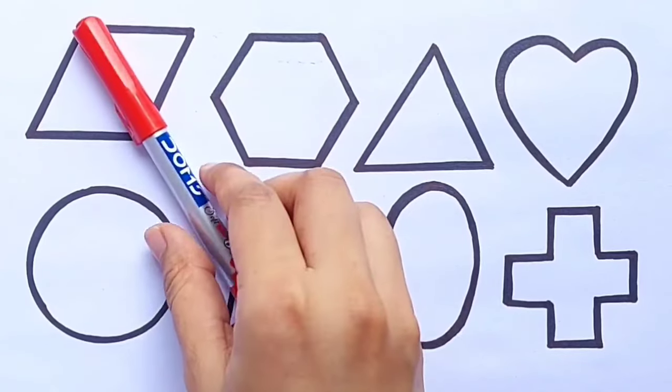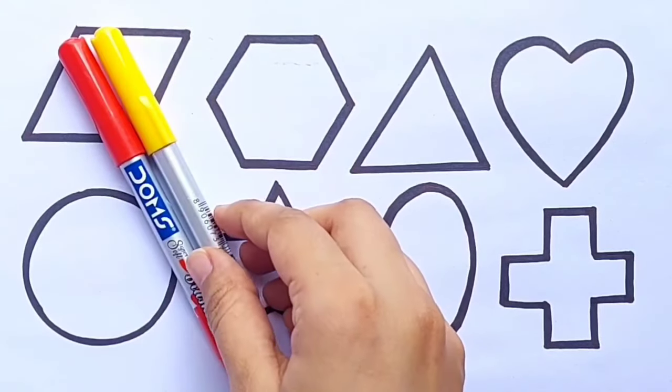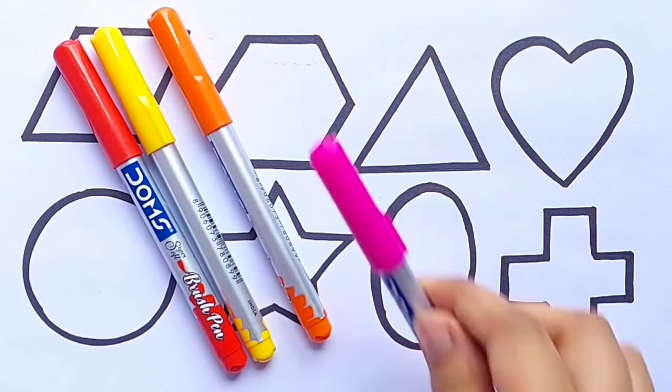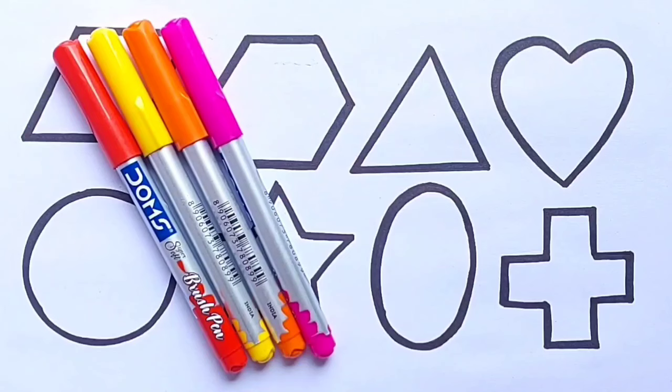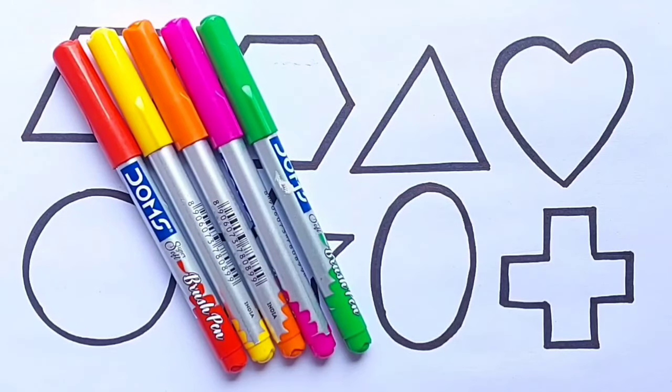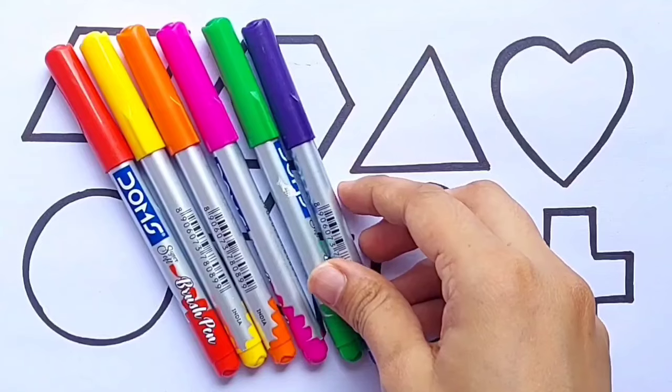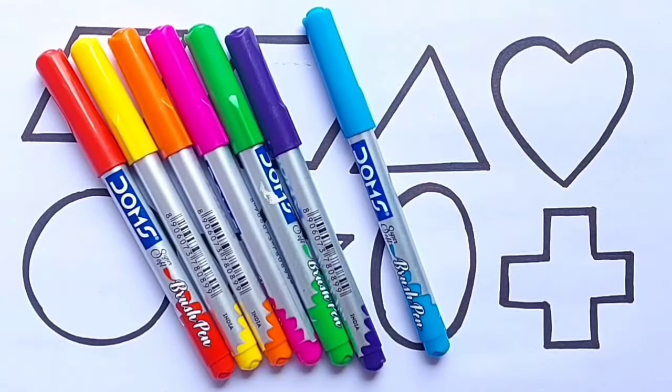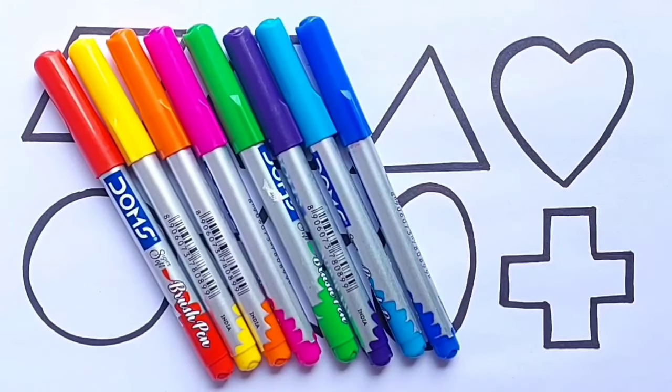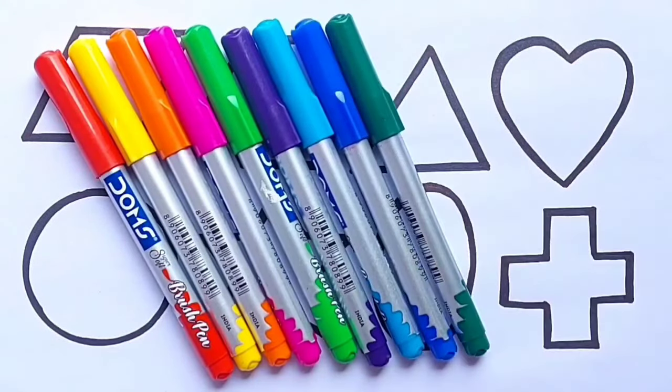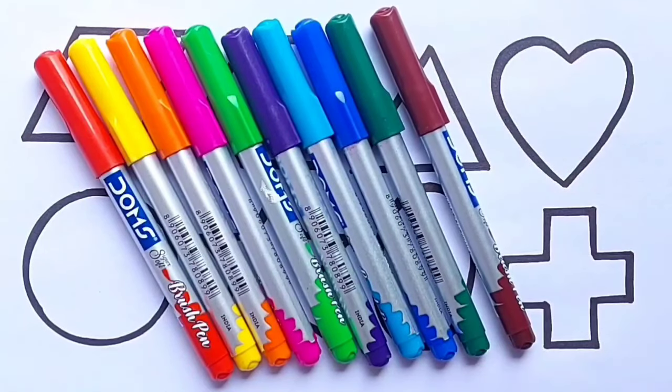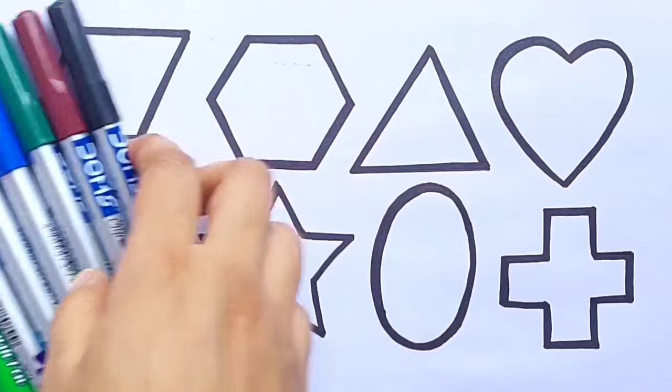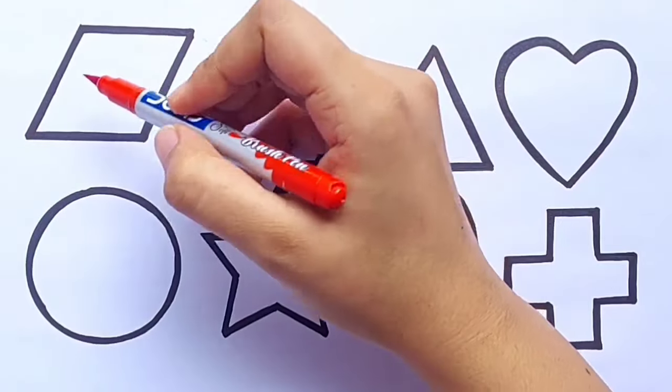Let's learn colors name. Red color, yellow color, orange color, pink color, light green color, purple color, sky blue color, blue color, green color, brown color, black color. Red color.